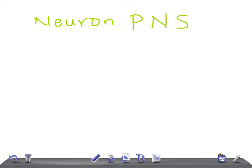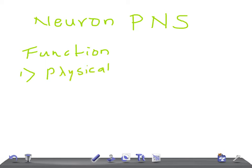These clear cells are present on the exterior surface of PNS neurons. Regarding their functions — try to memorize these important points — satellite cells provide physical support to the PNS neurons.